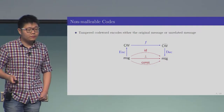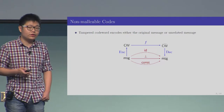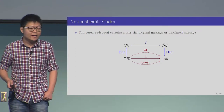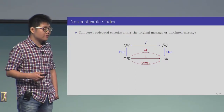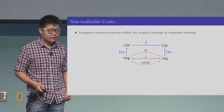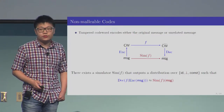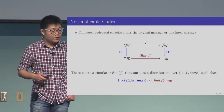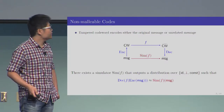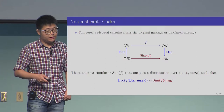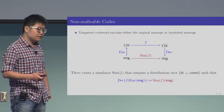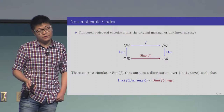The first way is the identity function, meaning the tampered message is identical to the original message. The second way is a special symbol bot, which simply means the tampered codeword is an invalid encoding. And finally, the third way is a constant function, meaning the tampered message is fixed to some constant no matter what the original message is. More formally, non-malleable code ensures that for this tampering function f, there exists a simulator that outputs a distribution over these three types of functions such that the distribution of the tampered message in the real world is indistinguishable from the simulated distribution. Note that the simulator only takes the tampering function as input and is oblivious to the original message.